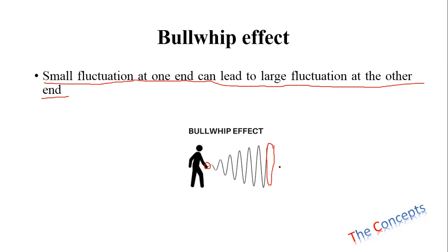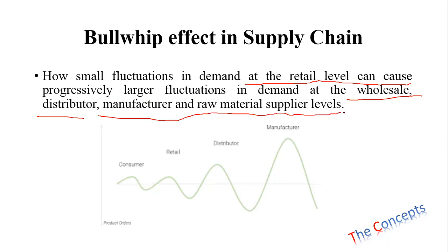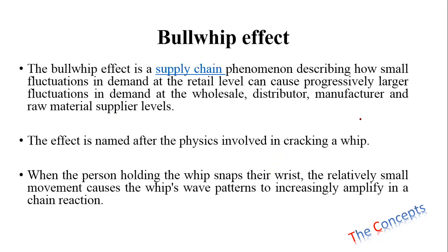Now, how do we use this concept in supply chain? That is the most important thing we are learning in this lecture. A small change at one end — which can be the consumer end — can lead to a larger change at the manufacturing end, or the farmer's end, or the raw material end. Small fluctuations in demand at the retail level can cause progressively larger fluctuations at the wholesale level, then to the distributor, then to the manufacturer, then to the raw material supplier, and so on.